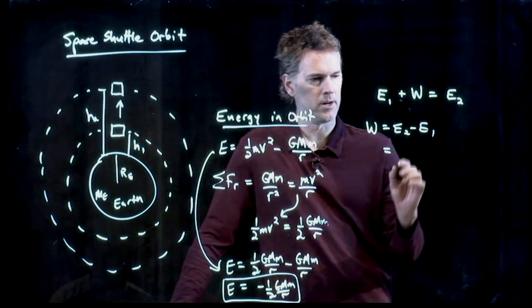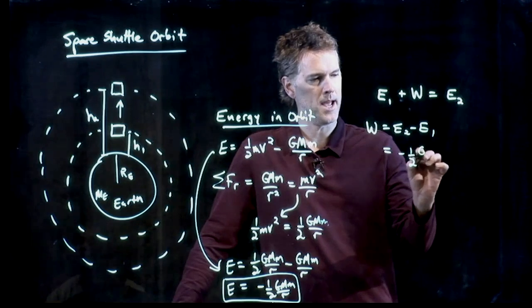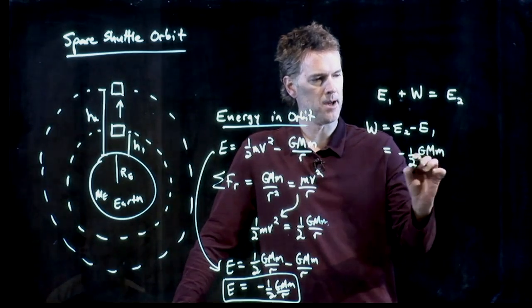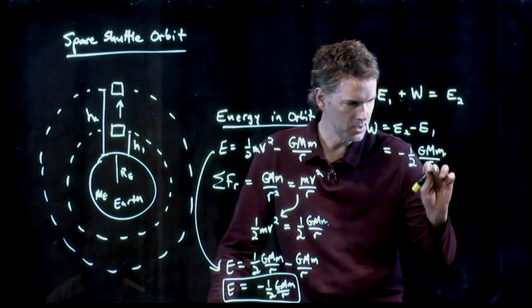And now we know what those are, right? E2 is going to be minus 1 half GMM over R1. Sorry, R2.